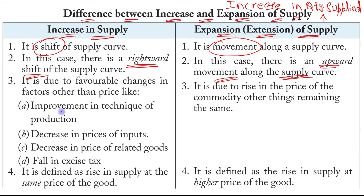Increase in supply includes improvement in technique of production, decrease in prices of inputs, fall in excise tax, a rise in the number of sellers in the market, and expectation of a fall in price in future.